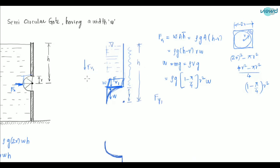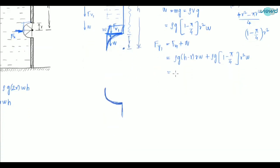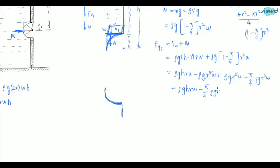Fv1 is in the downward direction and W is also downward, so we add both forces: Fv1 + W. This gives ρg(H − R)(RW) + ρg(1 − π/4)R²W. That is the resultant vertical force on the upper part.